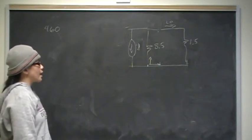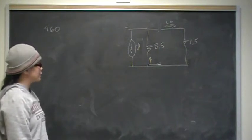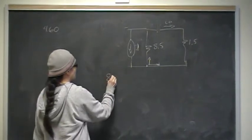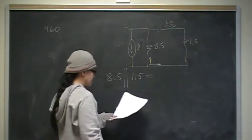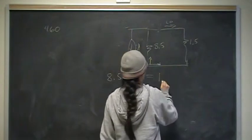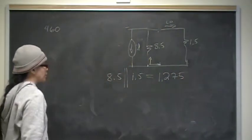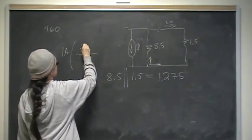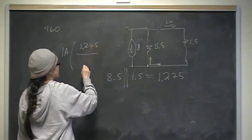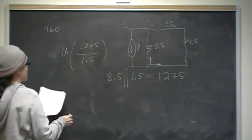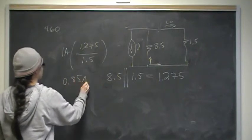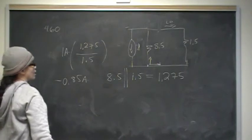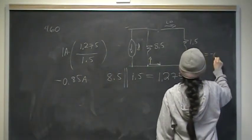Current division says the current through any branch equals the equivalent resistance of all parallel branches divided by the resistance of the branch you're interested in, times the total current. The equivalent resistance of 8.5 ohms in parallel with 1.5 ohms is 1.275 ohms. Applying current division: 1.275 divided by 1.5 times 1 amp gives 0.85 amps. The diagram shows the current in the opposite direction to our assumed reference, so I-naught equals negative 0.85 amps.